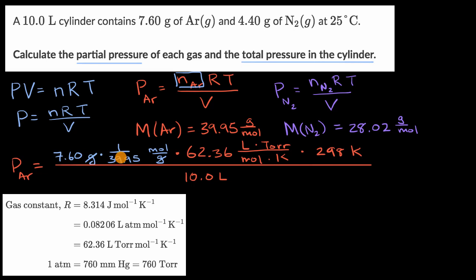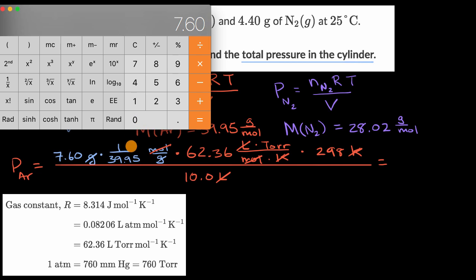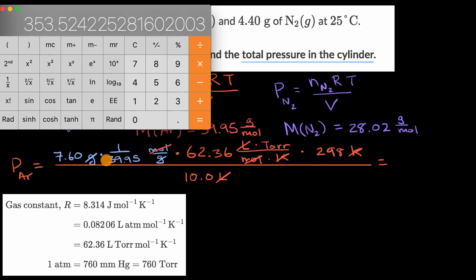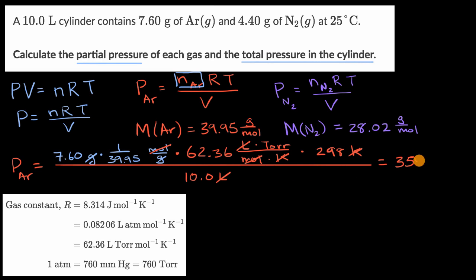We can validate the units: grams cancel with grams, moles cancel with moles, kelvin cancels with kelvin, and liters cancel with liters — leaving just torr, which is what we want. Computing 7.60 divided by 39.95, times 62.36, times 298, divided by 10.0, and considering significant figures — we have three significant figures as the minimum — rounds to 354 torr. So the partial pressure of argon is 354 torr.